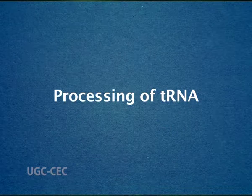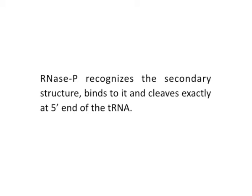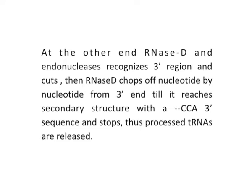In the processing of tRNA, the precursor tRNA, as it is synthesized, folds into secondary structures and assumes a three-dimensional form. RNase P recognizes the secondary structure, binds to it, and cleaves exactly at the 5' end of the tRNA. At the other end, RNase D, an endonuclease, recognizes the 3' region and cuts. Then RNase D chops off nucleotides one by one from the 3' end until it reaches a secondary structure with a CCA at its 3' sequence and stops. Thus, processed tRNAs are released.